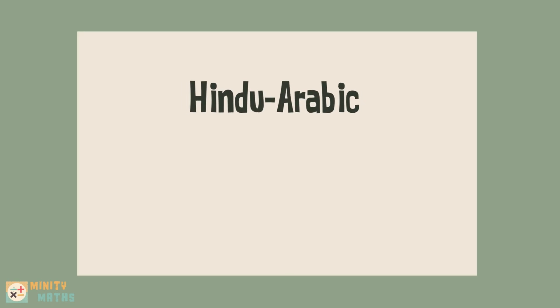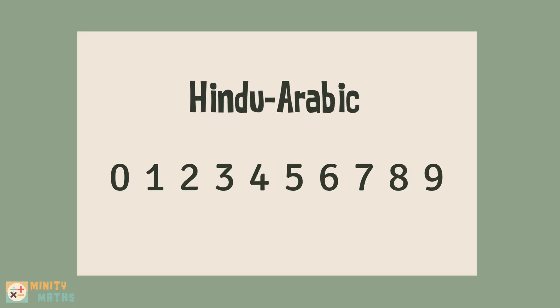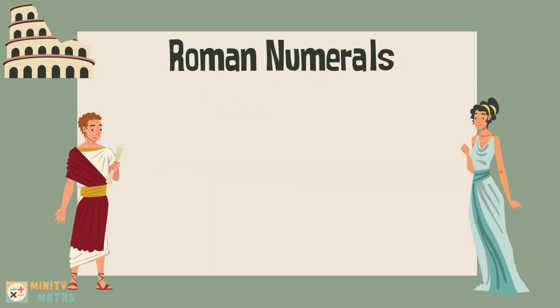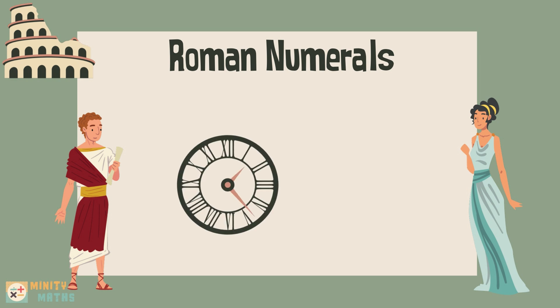Different types of numeral systems exist beside the one we commonly use. Our numeral system is called the Hindu-Arabic numeral system and forms the decimal number system. However, Roman numerals are an ancient system of numbers that was used in the Roman Empire. They are still used today in certain contexts, such as on clock faces and book chapters.